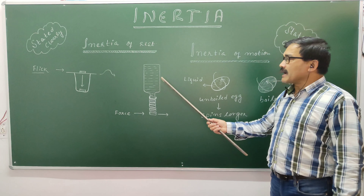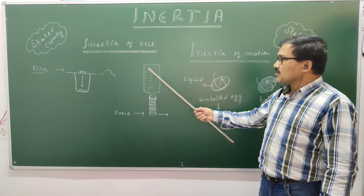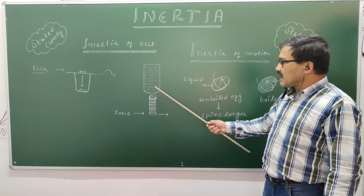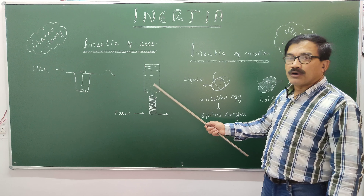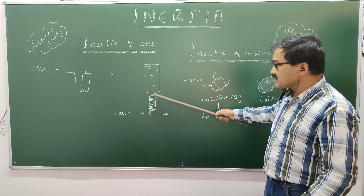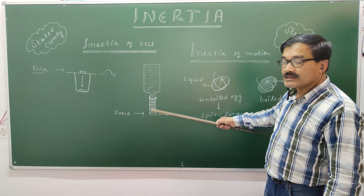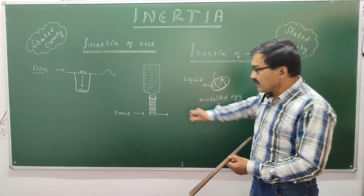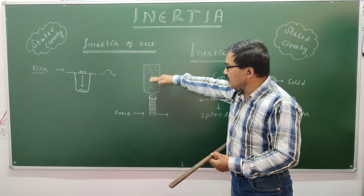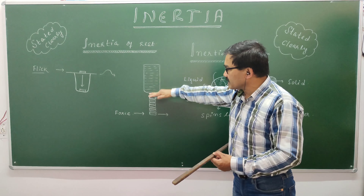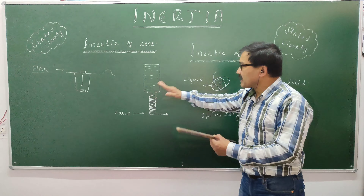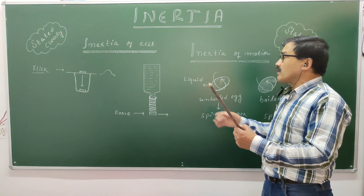In the second activity, we will take a bottle filled with water and keep it inverted on a pile of coins and cardboard. We will flick the coins one by one and you will see that the bottle keeps settling down, down and down, but it will not fall.